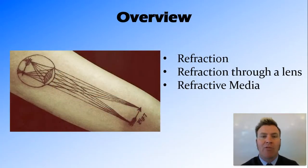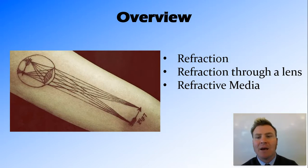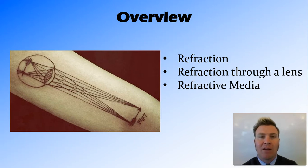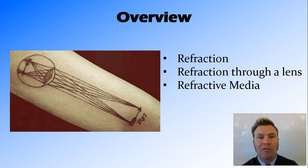In this video we've talked about refraction being the process where light bends as it enters a more or less optically dense medium. We've talked about refraction through a convex lens causing once-parallel lines to converge as they emerge. And we've talked about the different refractive media of the eye — each with its own refractive index — going from the air to the cornea, the aqueous humor, the lens, and the vitreous humor before it hits the retina. Thanks for watching guys.